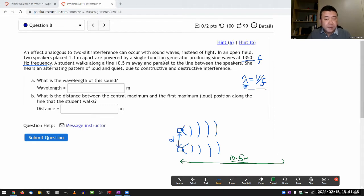A line parallel to the line between the speakers - so this would be the line between the speakers. I'm pretty sure this is what it means, because if somehow the student is walking along here, then the question doesn't make sense. So as the student walks along this line, she hears an alternating pattern of loud and quiet due to constructive and destructive interference.